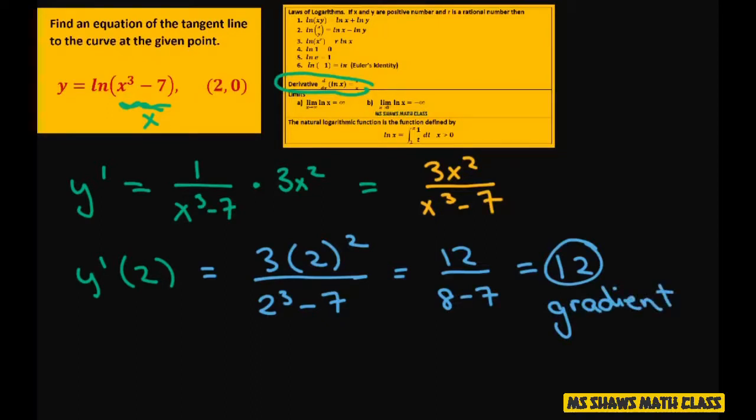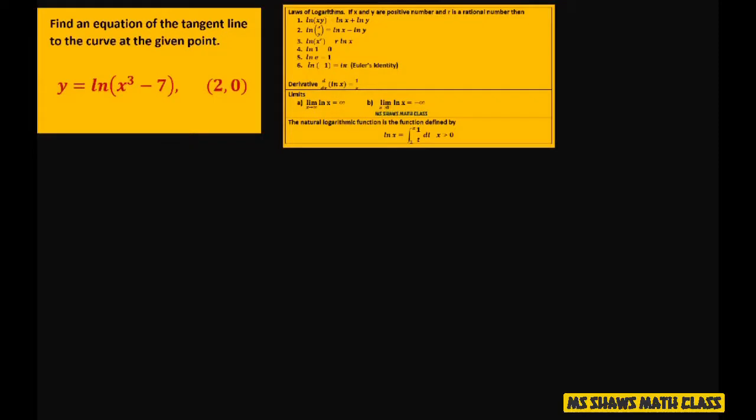Now we're going to find the equation. Our point is 2 comma 0, and our gradient is 12, or slope. You can call it gradient or slope is 12.